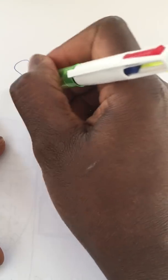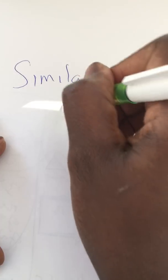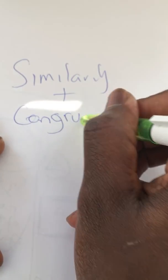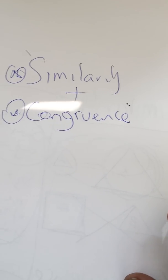Today we are going to look at what is called similarity and congruence. These are two concepts which are very important in the study of geometry because they help us to check the relationship between two objects.